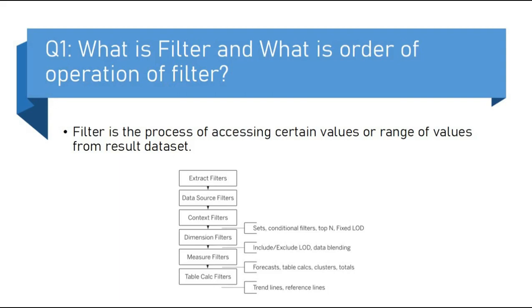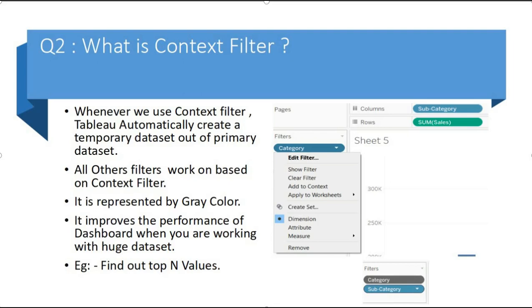The next question is what is context filter. Whenever we use the context filter, Tableau automatically creates a temporary data set out of primary data set and all the other filters work based on the context filter. It is represented by gray color. The main advantage of the context filter is it improves the performance.